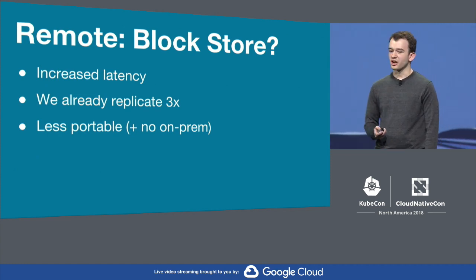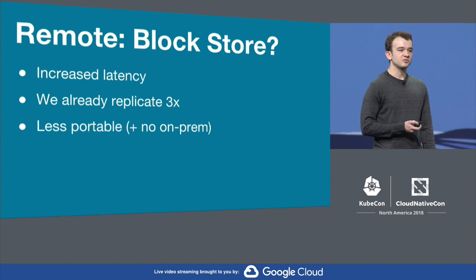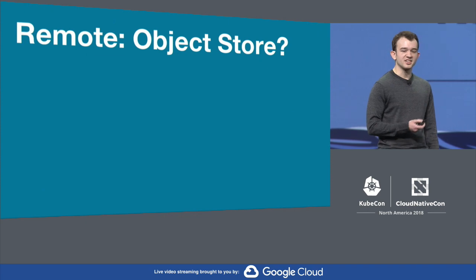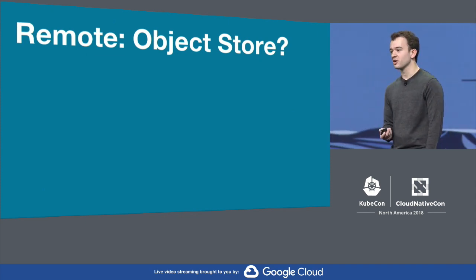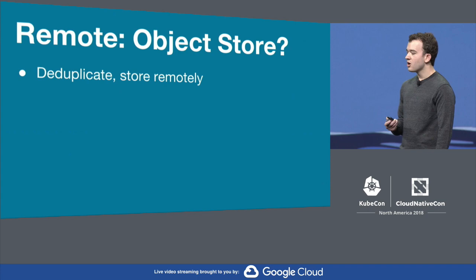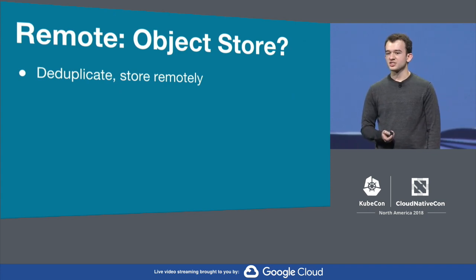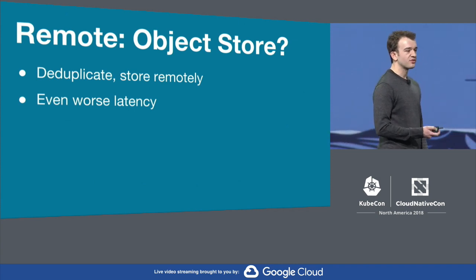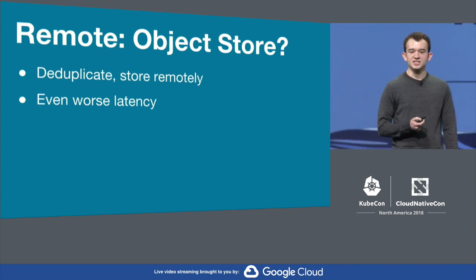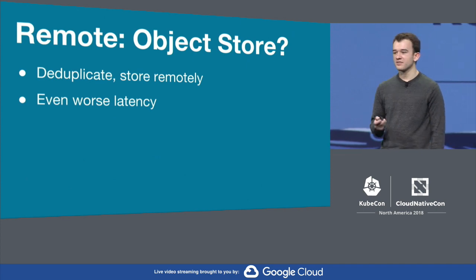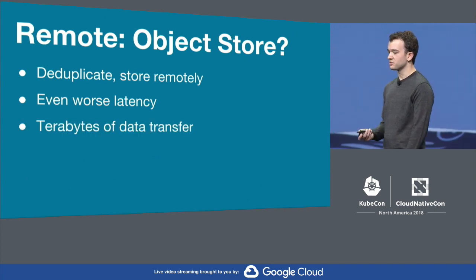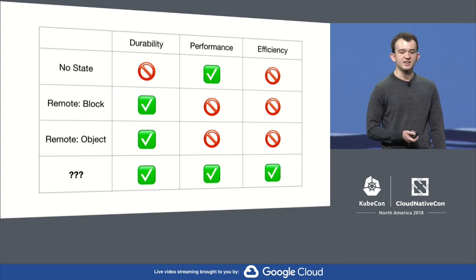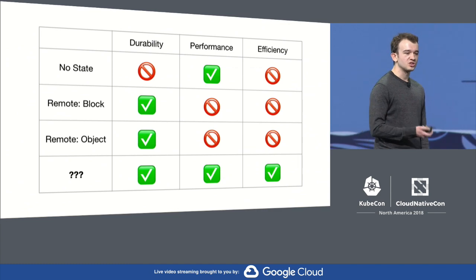Another option we had seen for storing remote state would be to de-duplicate the data and store it on a remote object store, like your friendly neighborhood cloud provider's object store such as S3 or Google Cloud Storage. While this is a little more efficient as we're only paying to store one copy of the data, we still weren't comfortable with the latency it introduced for real-time alerting. Additionally, we would still have the problem where we'd have to stream terabytes of data as containers moved around. So all of this left us looking for a solution that would be performant, durable, and efficient.